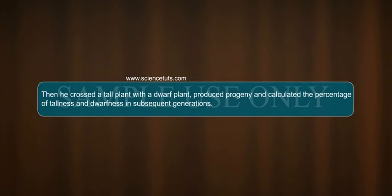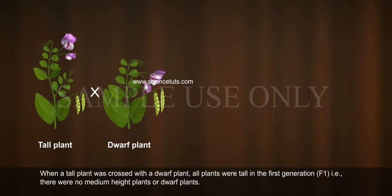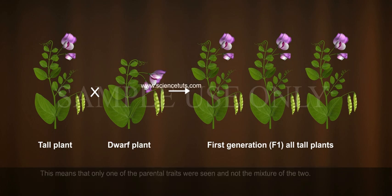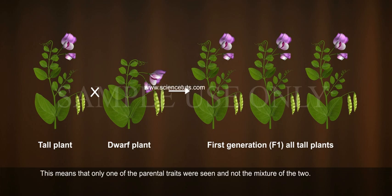Then he crossed a tall plant with a dwarf plant, produced progeny, and calculated the percentage of tallness and dwarfness in subsequent generations. When a tall plant is crossed with a dwarf plant, all plants were tall in the first generation, F1 — there were no medium height plants or dwarf plants. This means that only one of the parental traits was seen, but not a mixture of the two.